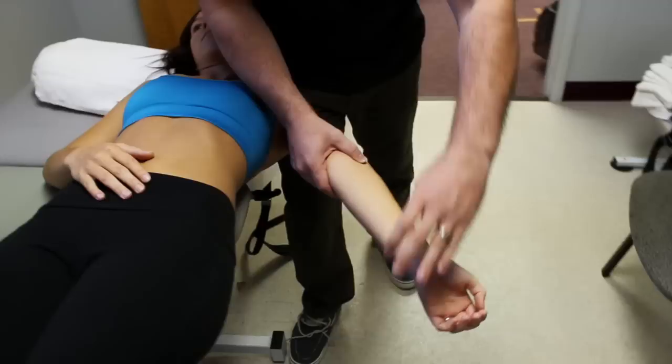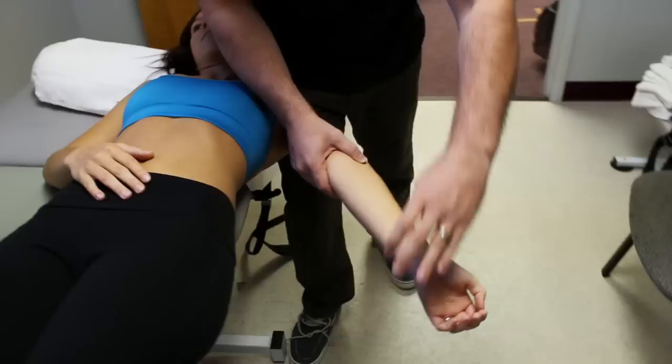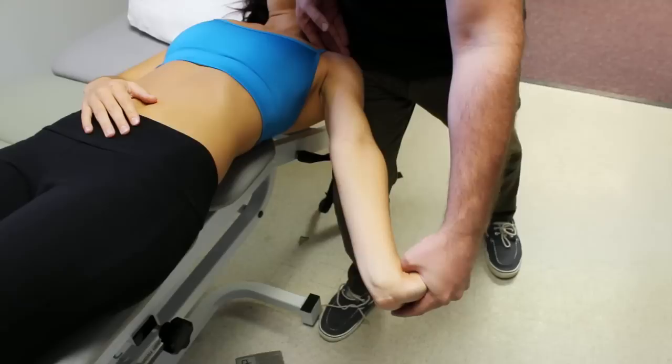You want to extend the wrist, the fingers, and the thumb while maintaining forearm supination. Then you'll gently bring the shoulder into abduction. The patient may feel some tension.